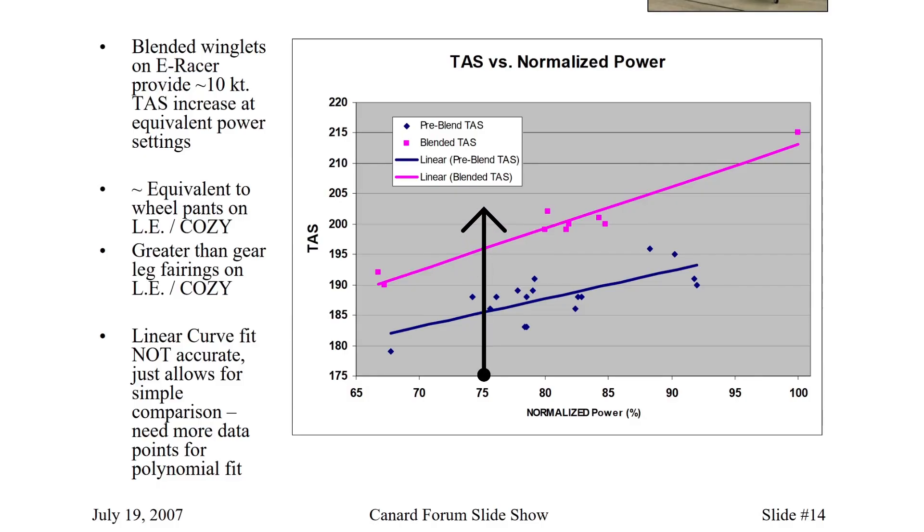At about 75% normalized power, an averaged line of best fit between multiple tests showed that the plane was originally capable of flying at about 186 knots true airspeed in level flight. With the blended winglets, this same power allowed for a true airspeed of about 197 knots. This is an improvement of 11 knots, or almost 6%, with no increase in fuel burn.